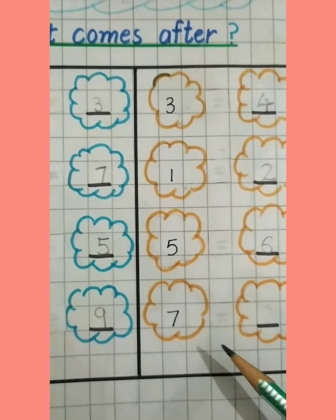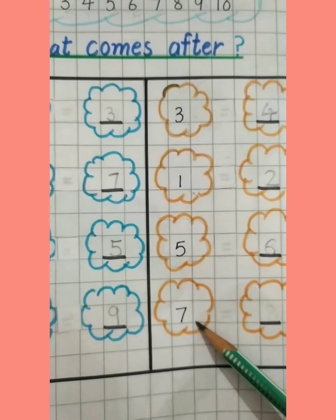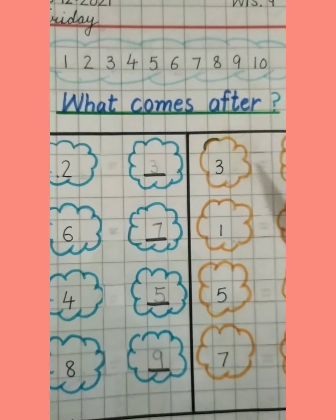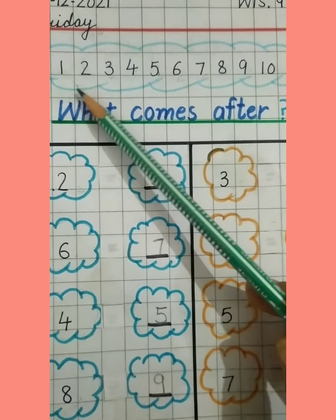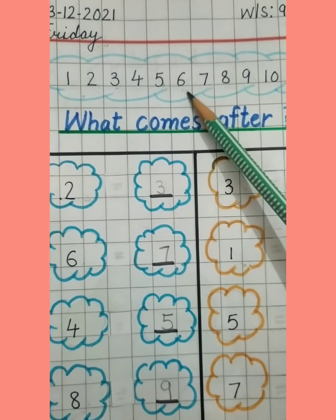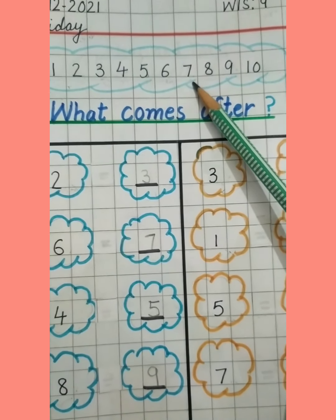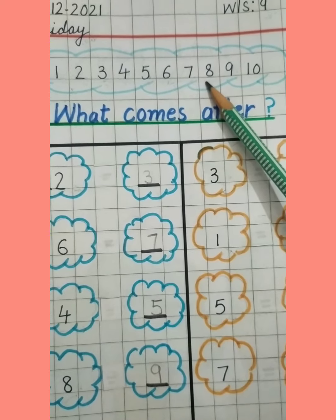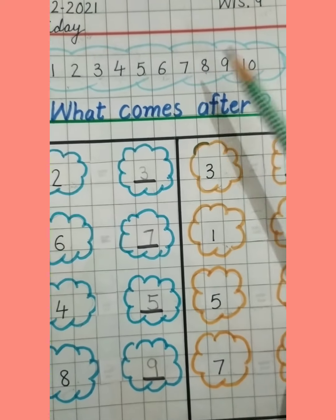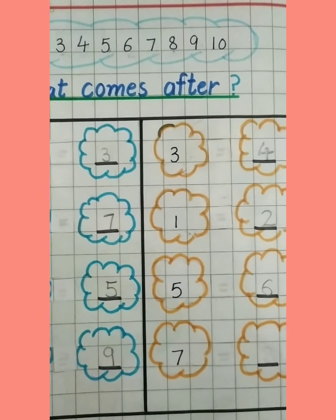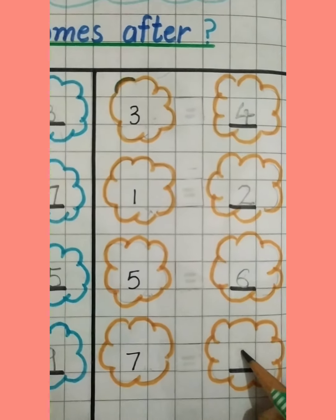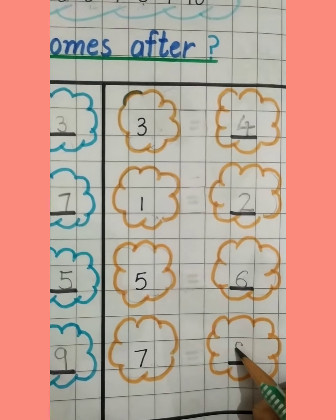Now look here. This is number 7. And what comes after 7? 1, 2, 3, 4, 5, 6, 7 — 8. After 7 is 8. So abhi hamein yahan par likhna hai number 8.